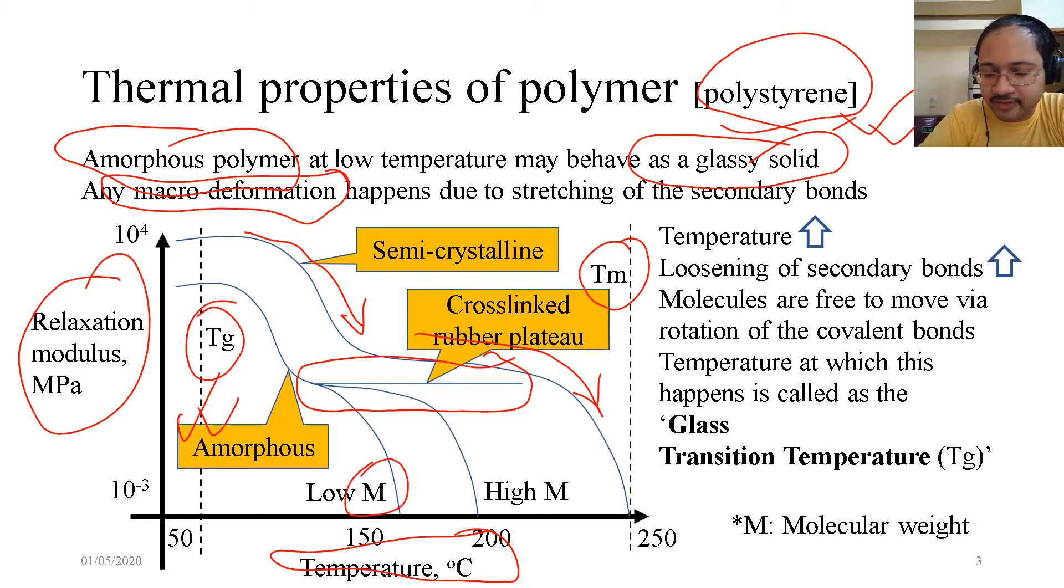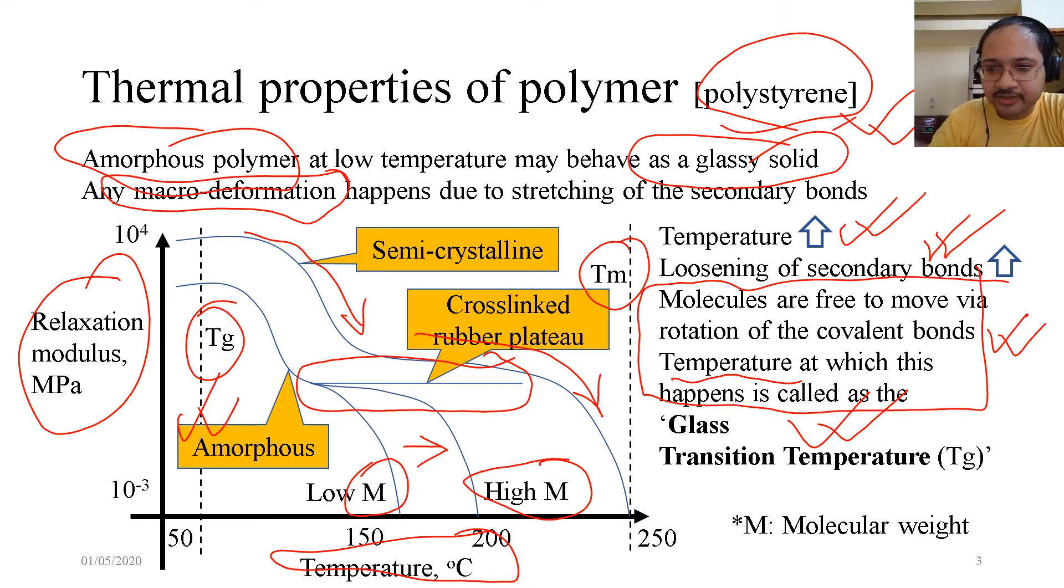Now if it has a low molecular weight, the relaxation modulus may come down with increase in temperature quickly. Whereas if it is a high molecular weight, it will come down slower. If temperature is increased, that means secondary bonds are loosened. The molecules are free to move via rotation of these covalent bonds. And the temperature at which this happens is called the glass transition temperature. In other sources, glass transition temperature is defined as a temperature where a material converts from a glassy phase to a rubbery phase. But this is the physics behind it.